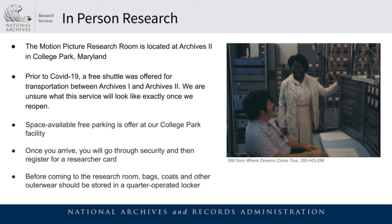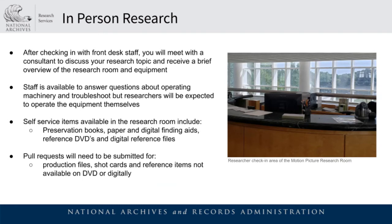Once you arrive and go through security, if it is your first time at Archives I or Archives II you will need to register for a researcher card before making your way to the motion picture research room. All bags, coats, and outerwear will need to be stored in a quarter-operated locker. Once on the fourth floor, you will check in with a staff member who will direct you to our consultant's office. Our consultants will provide you with a brief overview of records relating to your research, the location of finding aids and self-service records, and introduce you to the equipment used to view records.